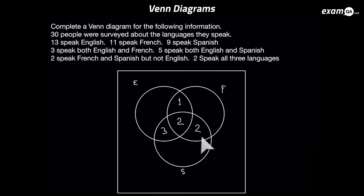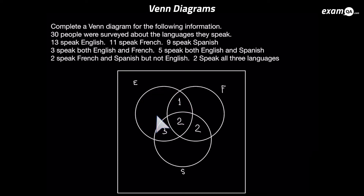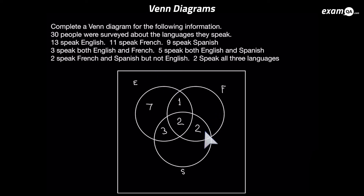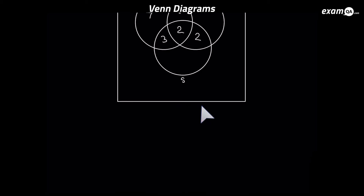Now 13 speak English — English is everything in the English circle, all of which is 13. Since we know the three, two and one already placed total 6, we subtract 6 from 13, leaving 7 — put that 7 in the remaining English-only slot. Similarly, 11 speak French — subtract the two, two and one already placed (totalling 5) from 11, which leaves us 6 for the French-only region.